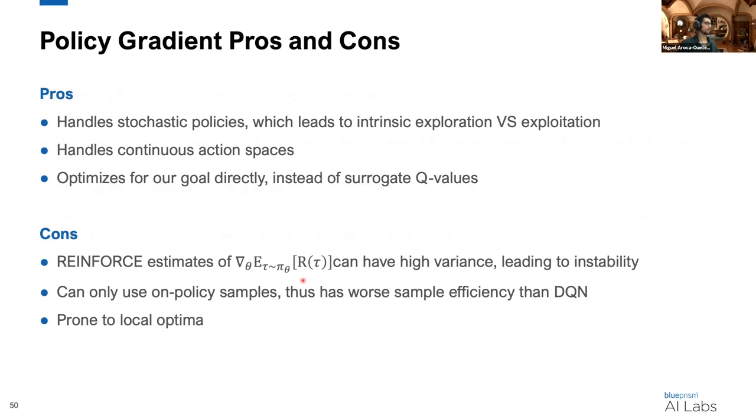Okay, so to summarize the advantages and disadvantages. The policy gradient approaches allow you to handle stochastic policies, and there's this intrinsic balance of exploration and exploitation. We handle continuous action spaces very nicely. And perhaps most importantly, we're actually optimizing for a goal directly instead of using surrogate Q-values.